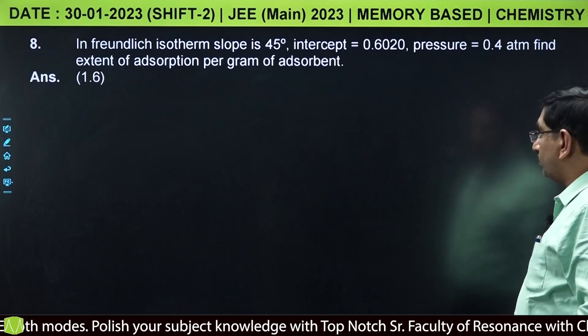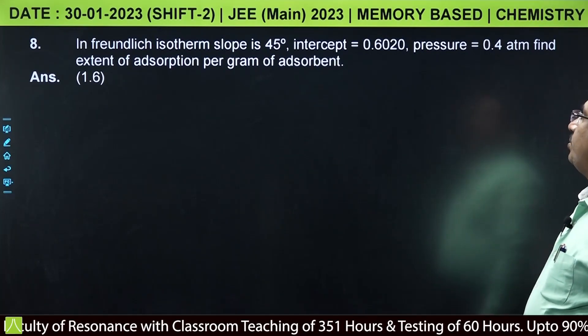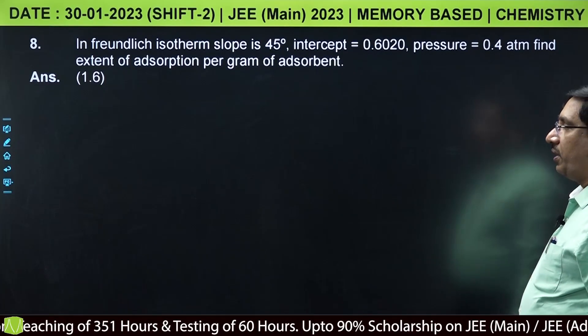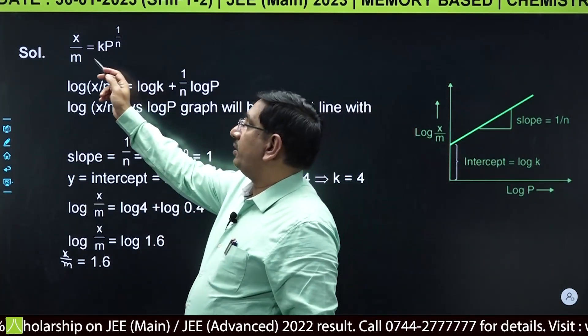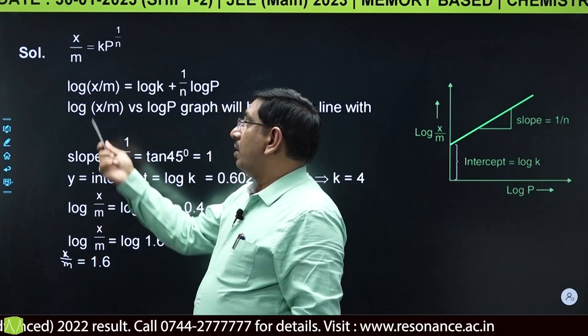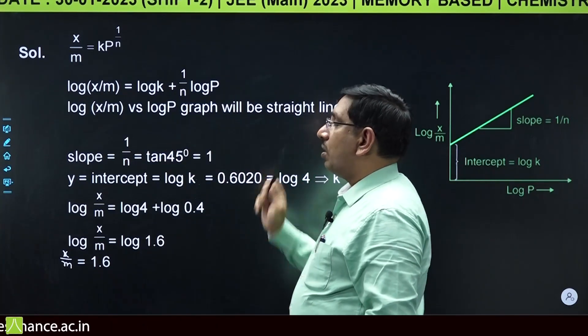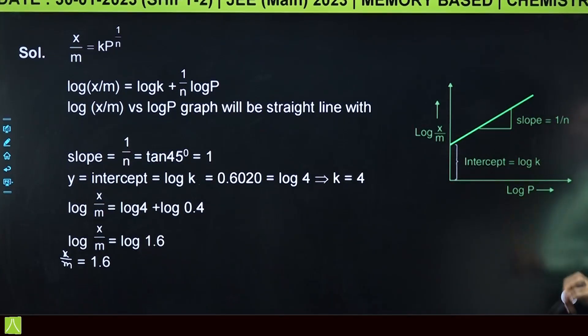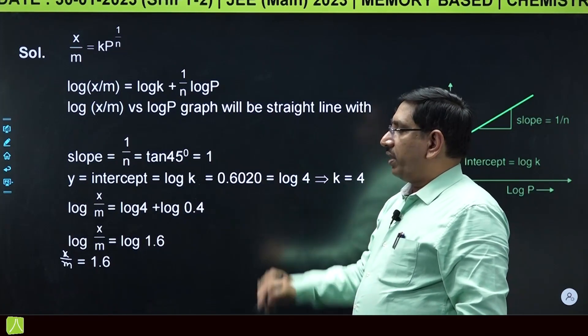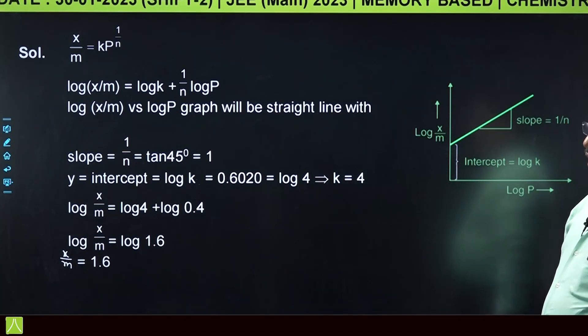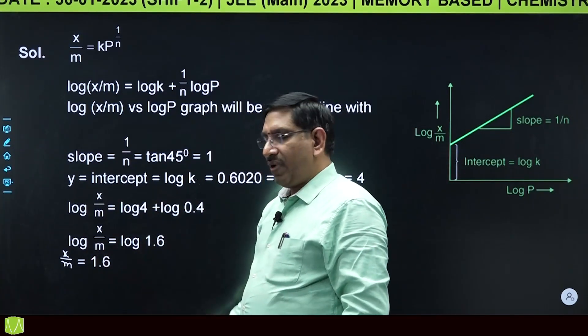Next, in Freundlich isotherm, slope is 45 degrees, intercept is 0.6020, and pressure equals 0.4 atm. Find the extent of adsorption per gram of adsorbent. From Freundlich adsorption isotherm, x by m equals k into p power 1 by n. Taking log on both sides, log x by m equals log k plus 1 by n log p. The slope is tan 45 equals 1, so 1 by n equals 1. The y intercept log k is 0.6020, so k equals 4. Putting the data, you get x by m value is 1.6.